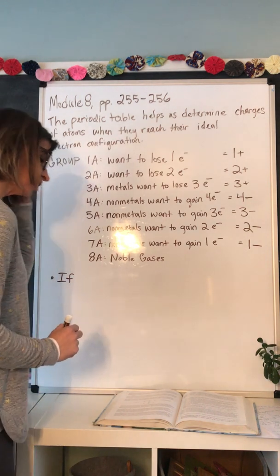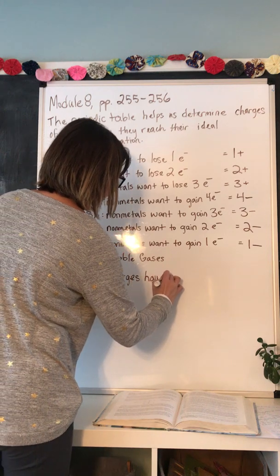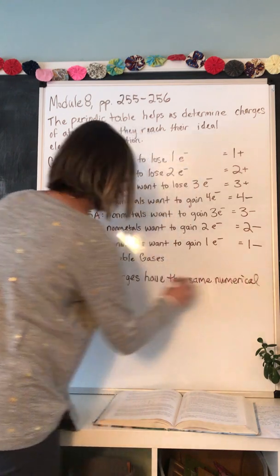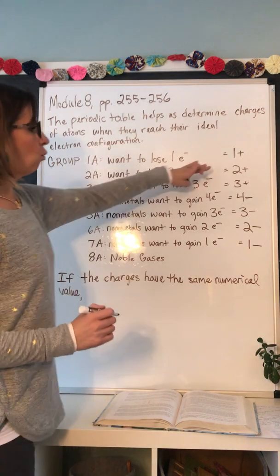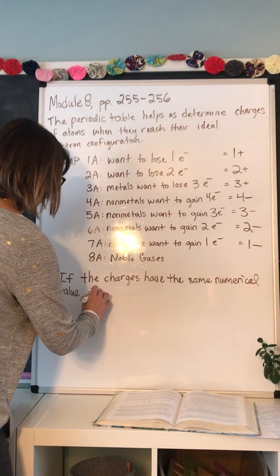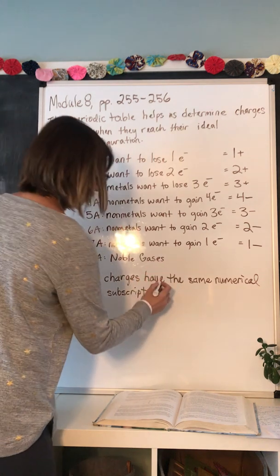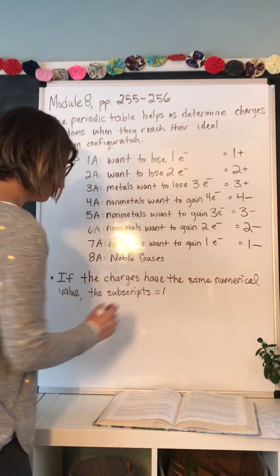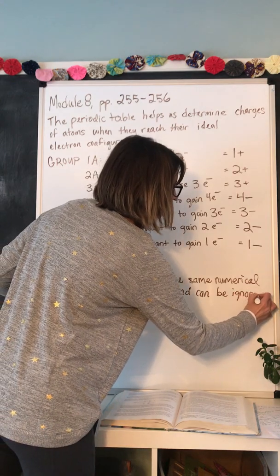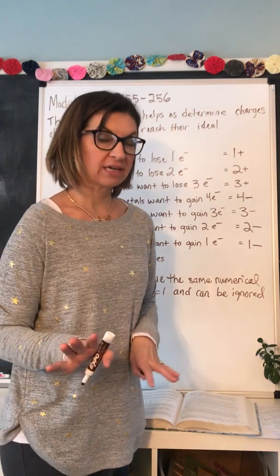Rule one: if the charges have the same numerical value — for example, one is 2+ and one is 2- — they cancel each other out. The subscripts cancel each other out and are both equal to one. They can be ignored because chemists never include a subscript of one at the bottom; they just ignore it.